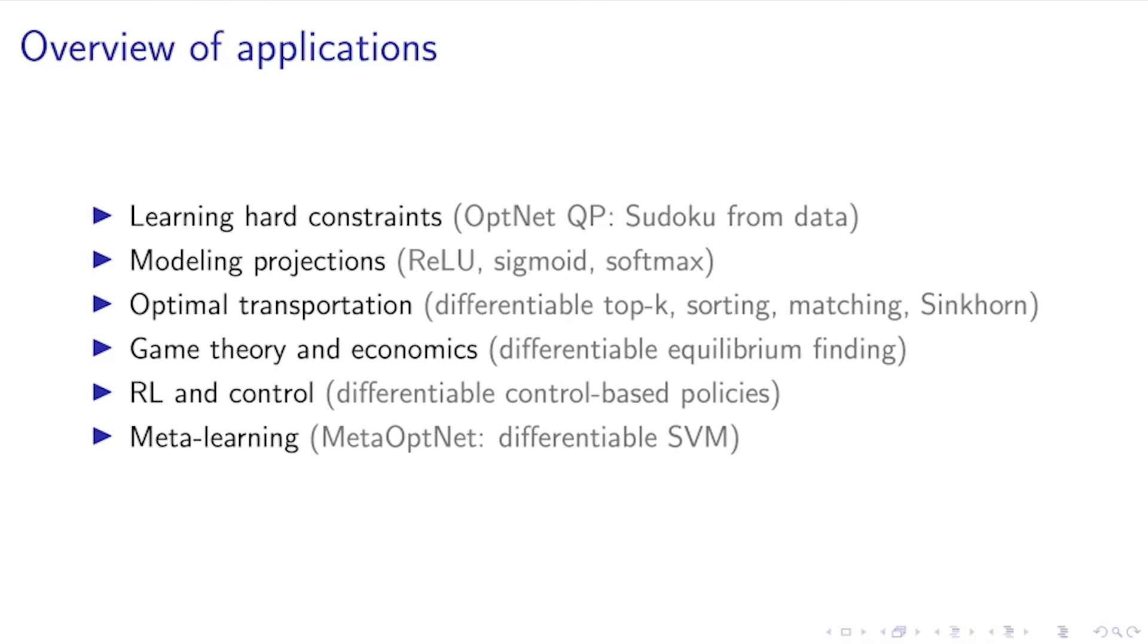A third application area that spans a huge range of topics is optimal transportation, where you can think about making the top-K operation differentiable through this lens. You can make sorting differentiable, you can make matching differentiable, and part of doing all of this is by thinking about Sinkhorn as solving a differentiable convex optimization problem, which you can also differentiate through.